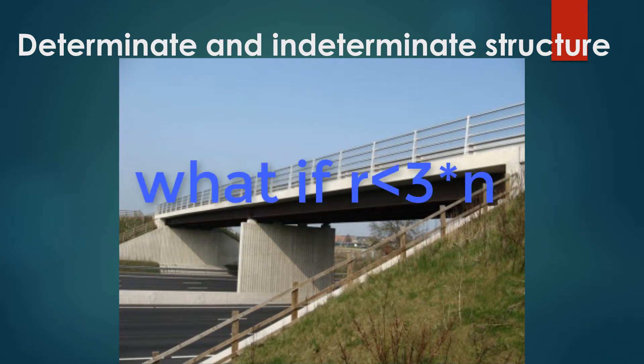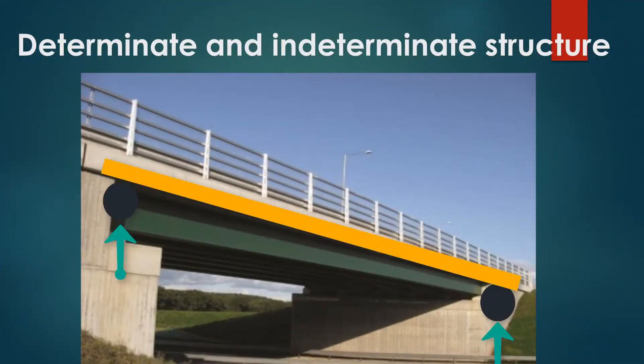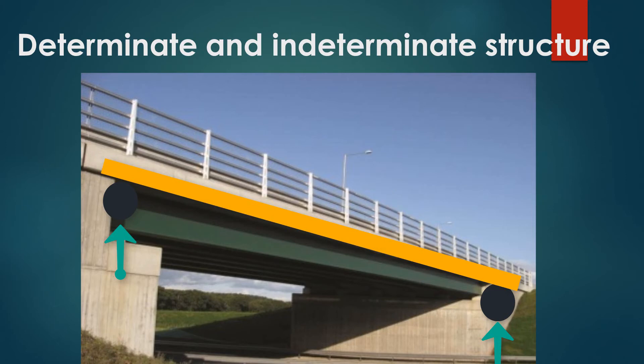If r is less than 3 times n — for example, assume this bridge is sitting on two roller supports — we would have only vertical forces and no horizontal forces, so r equals 2, which is less than 3 times n. But would the bridge on two rollers be stable? The answer is no, because the bridge will slide since the horizontal force is not resisted. So if r is less than 3 times n, the structure will not be stable.